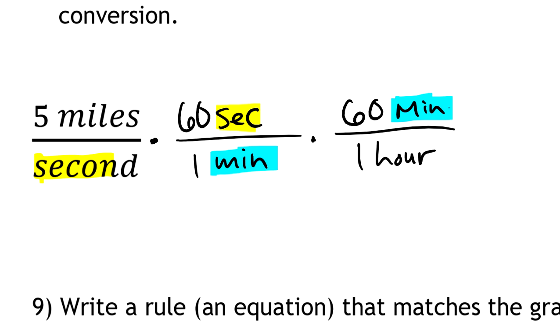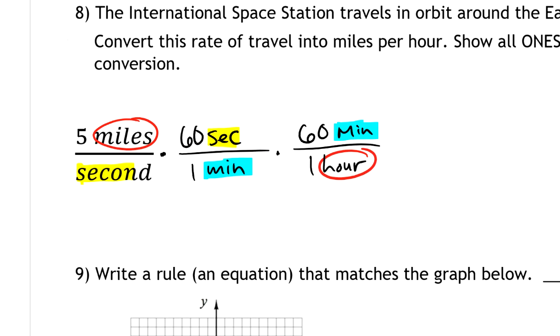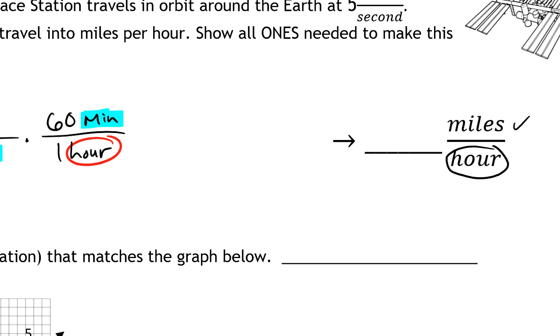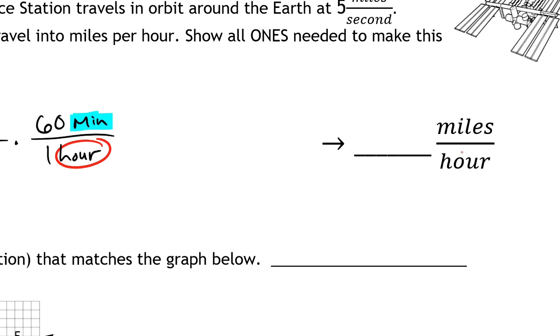When you look at what's left, the only units I have left are miles in my numerator and hours in my denominator. That's the target units I was looking for. I want my answer expressed in miles per hour, so I'm there.